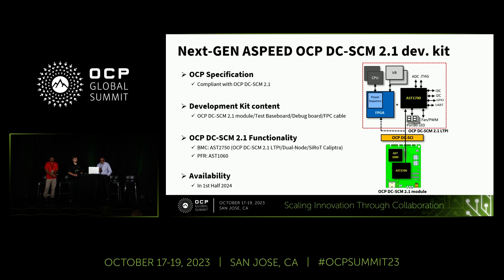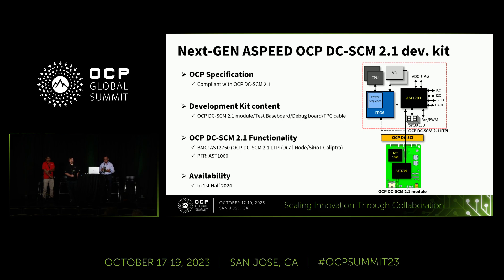What we are doing next is continuing to support OCP's DCSCM 2.1. We are in the process of integrating some of the functionality defined in the 2.0 specification. For example, we are integrating the LTPI and LVDS into the BMC, so no external component is needed. We also designed the ASP 1700, which provides the LTPI slave side and gives a seamless connection between the DCSCM and the HPM. This allows us to not only provide the capability already defined in LTPI, but go a little beyond that and use the data frames to enhance capability on the HPM side.